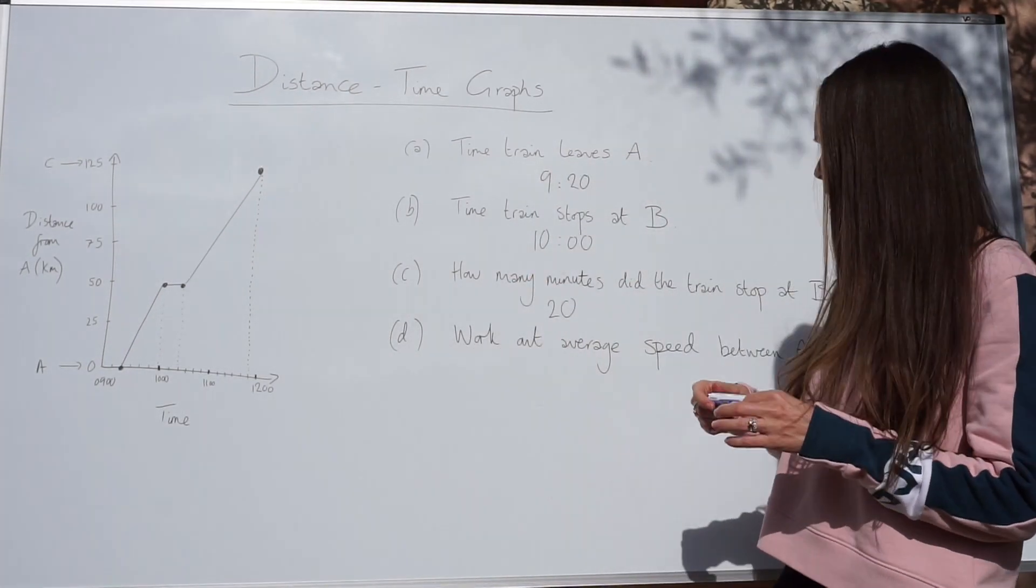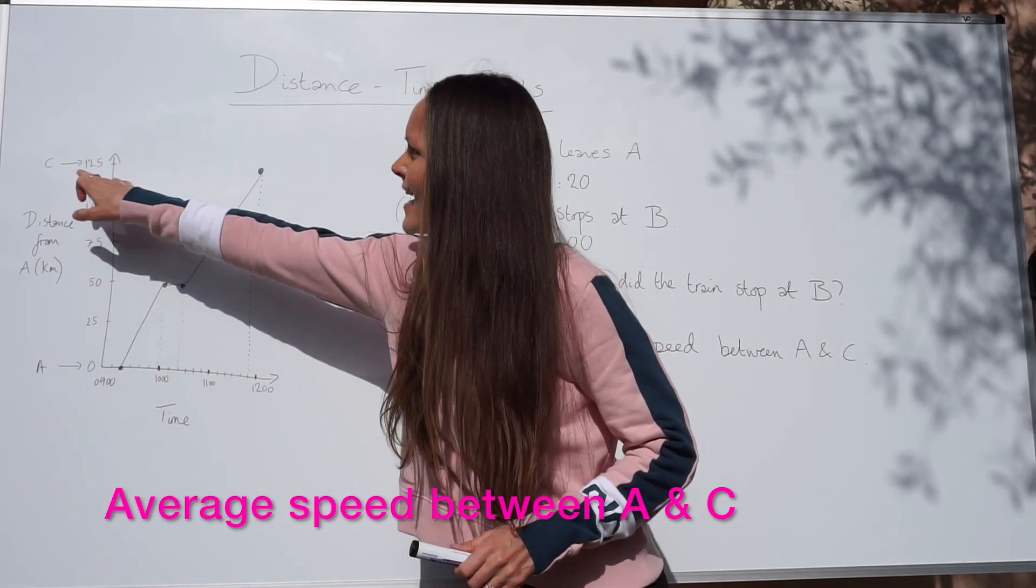So 10 plus 10 is 20. So the train stopped for a total of 20 minutes.